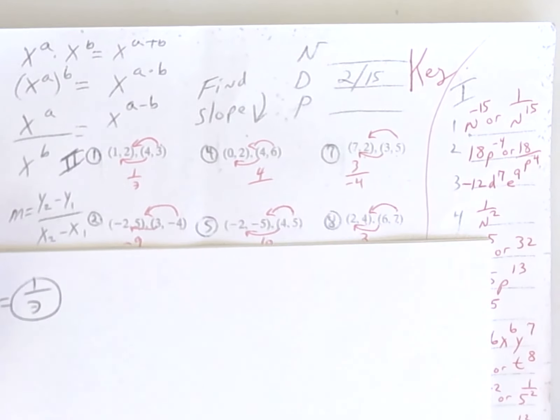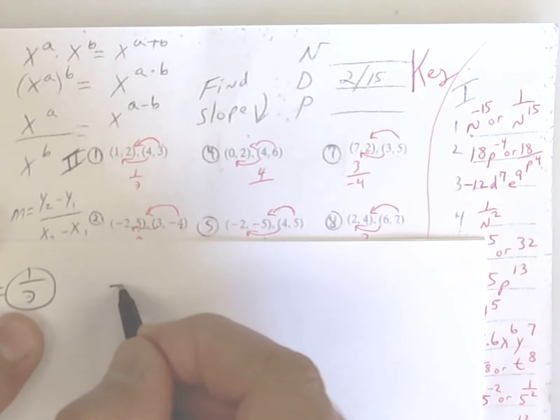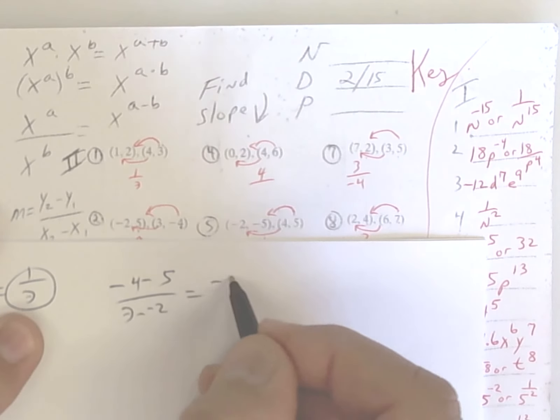Let's do one more with the slope. y minus y. So negative 4 minus 5. And 3 minus a negative 2. So that becomes negative 9. That becomes a plus. And 3 plus 2 is 5.